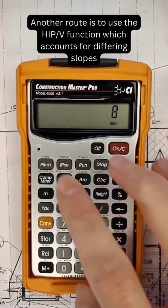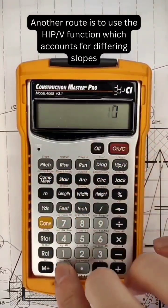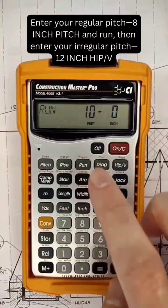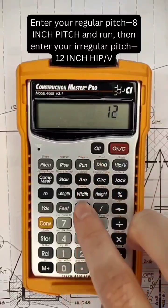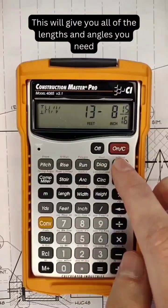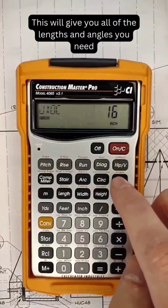Another route is to use the hip valley function, which accounts for differing slopes. Enter your regular pitch and run, then enter the irregular pitch. This will give you all the lengths and angles you need.